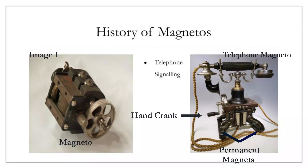The telephone magnetos were used until the 1800s in telephone signaling. When a caller wanted to make a call to someone, they would rotate the hand crank. By doing so, a signal was sent to the local operator, who then connected the caller to the person whom they wanted to call.